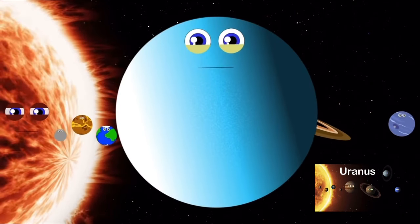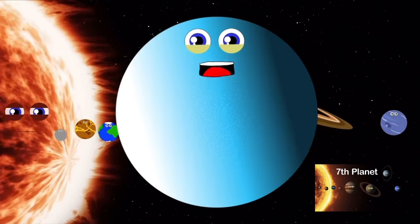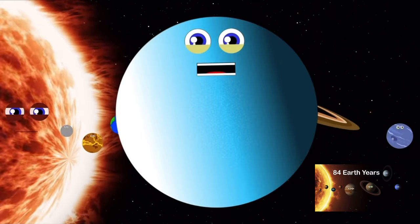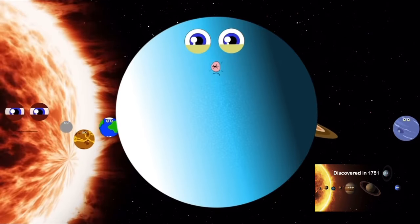My name's Uranus, I am blue in color, I'm the seventh planet from the sun. I orbit the sun once in 84 earth years, and was discovered in 1781.